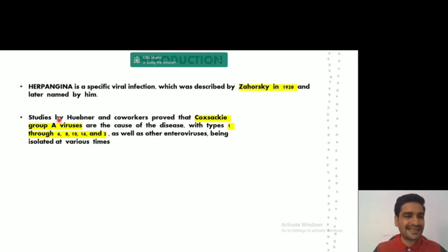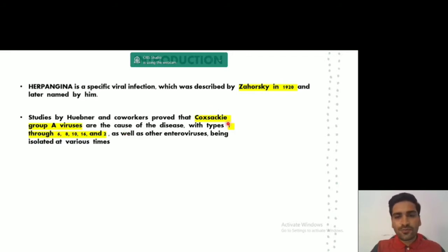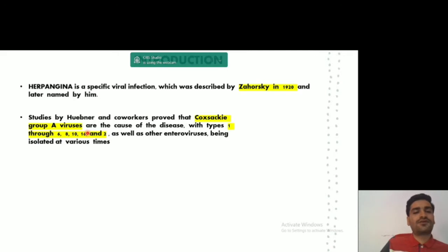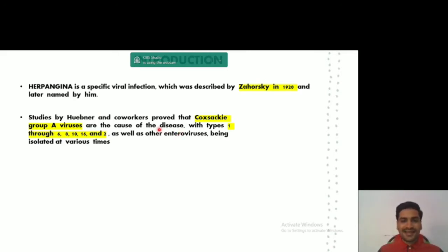Various studies have found that Coxsackievirus Group A is the virus responsible for the occurrence of herpangina. There are various strains of Coxsackievirus Group A — that is strains 1, 6, 8, 10, 16, and 2 — which are the most common strains responsible for herpangina.